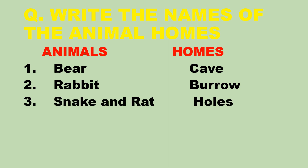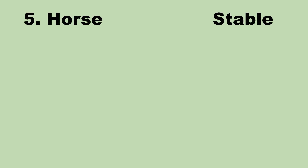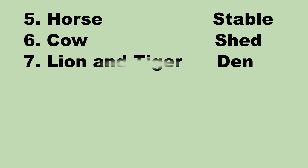Snake and rats live in holes. Dog lives in a kennel. Horse lives in a stable. Cow lives in a shed. Lion and tiger live in a den.